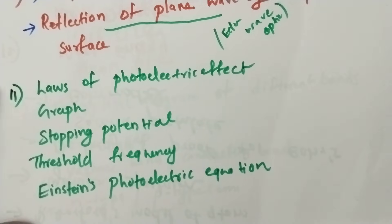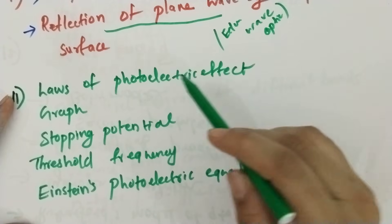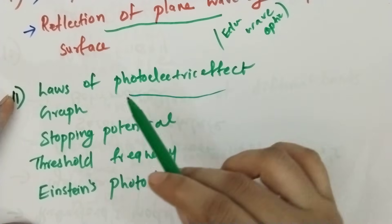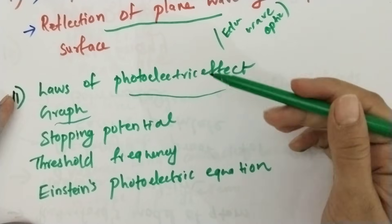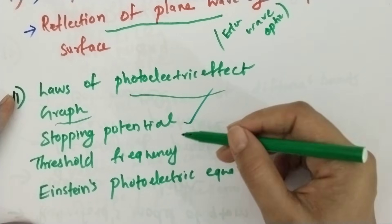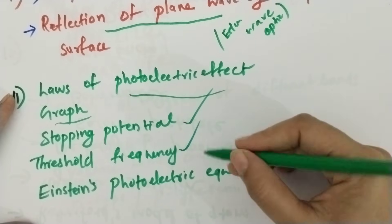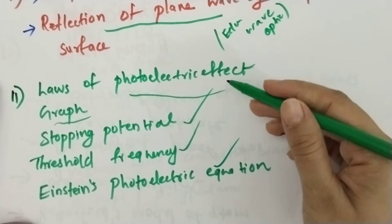You will learn dual nature. Photoelectric effect — the graph, stopping potential, threshold frequency. I am going to teach the Einstein photoelectric equation.